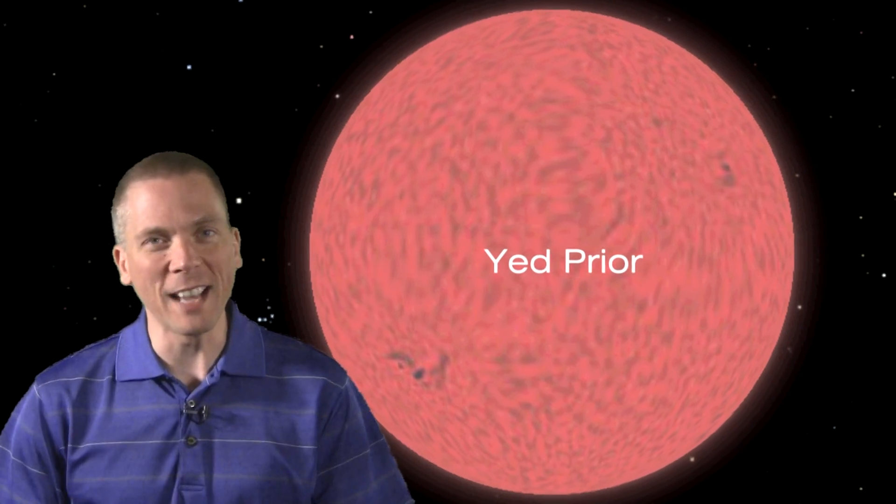While physically large, it contains just 1.5 times the mass of our Sun. So it's a bit of a fluffy star, as its density is quite low compared to our host star.